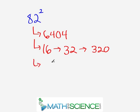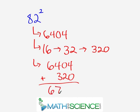Now, let's add these together. 6404 and 320. Adding in our head, we have 6404. Adding the 300, 6704. 6724. That's the final answer.